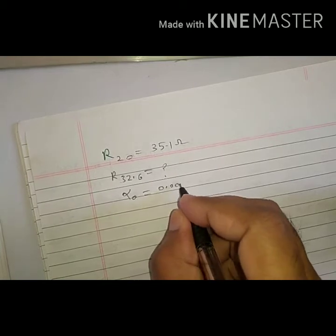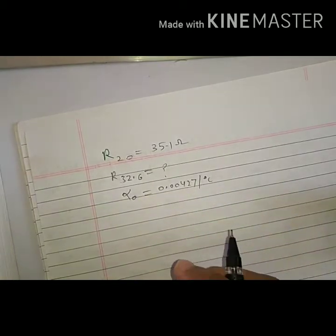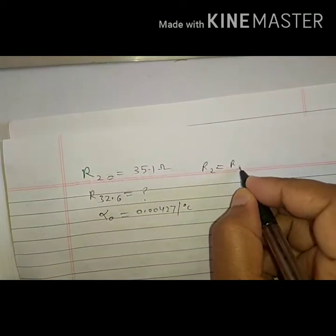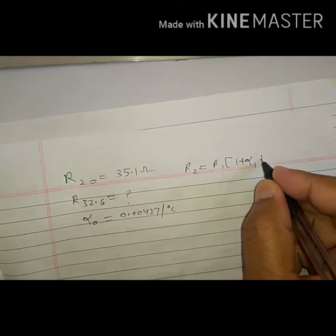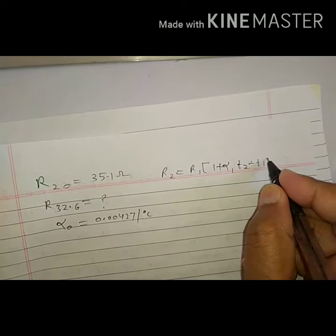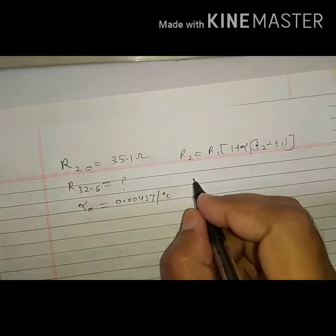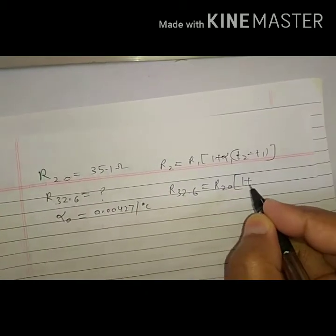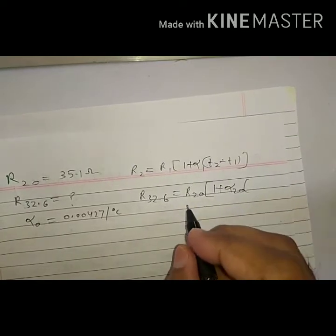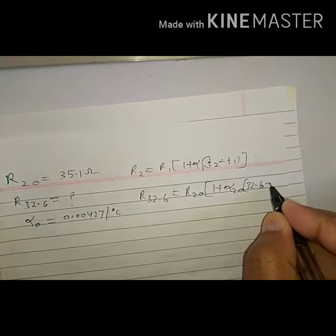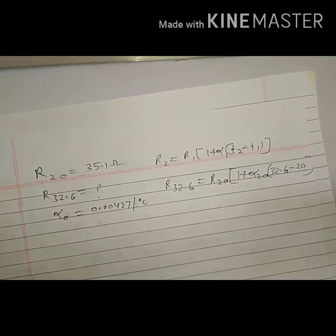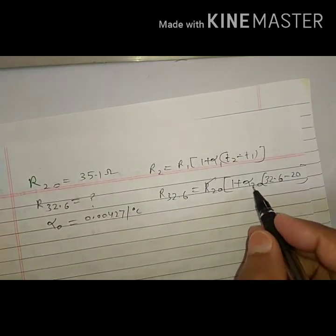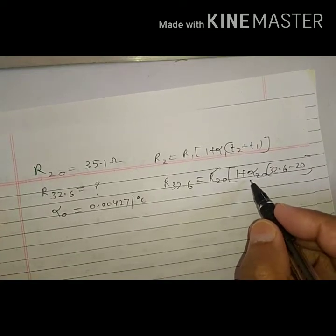Alpha zero of copper is the standard value 0.00427 per degree Celsius. By formula, R2 = R1(1 + α₁(T2 − T1)). Similarly, R₃₂.₆ = R₂₀ × (1 + α₂₀ × (32.6 − 20)). Now R₂₀ is given, but α₂₀ is not given — we only have α₀.